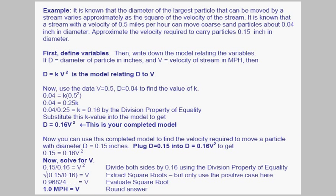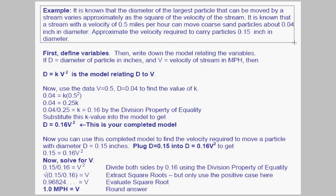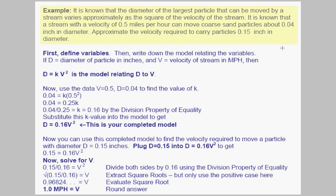Now let's look at an example that uses variation in an application. It's known that the diameter of the largest particle that can be moved by a stream varies approximately as the square of the velocity of the stream. We know that a stream with a velocity of 0.5 miles an hour can move coarse sand particles about 0.04 inches in diameter. Using this data, approximate the velocity required to carry particles 0.15 inches in diameter.